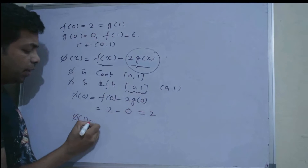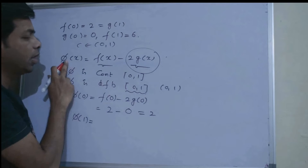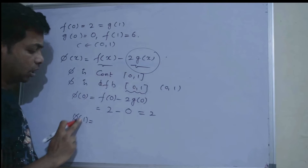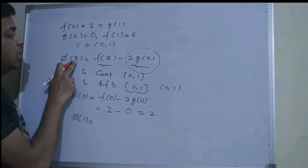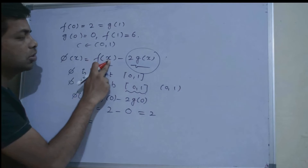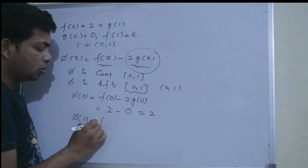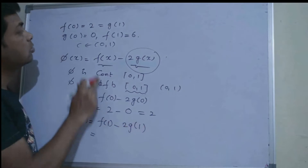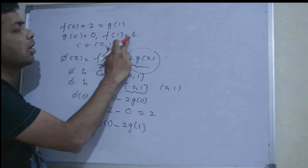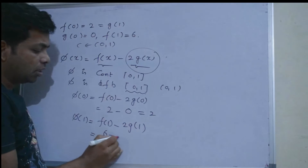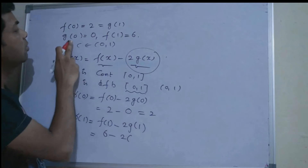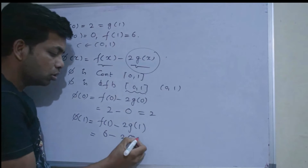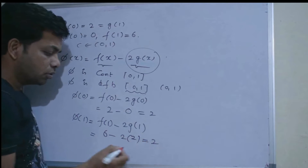Next, I will calculate φ(1). Substituting x = 1: φ(1) = f(1) - 2g(1). Using the given values, f(1) = 6 and g(1) = 2. So φ(1) = 6 - 2(2) = 6 - 4 = 2.